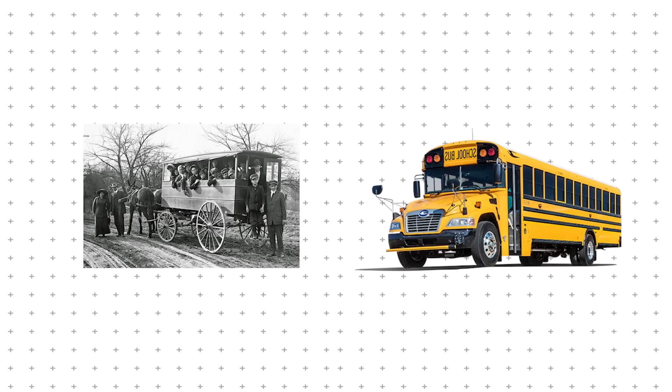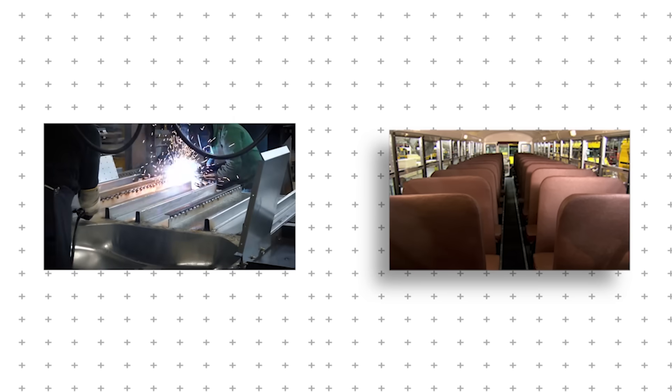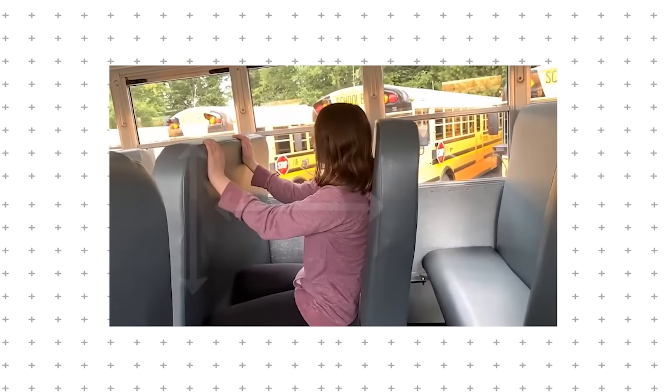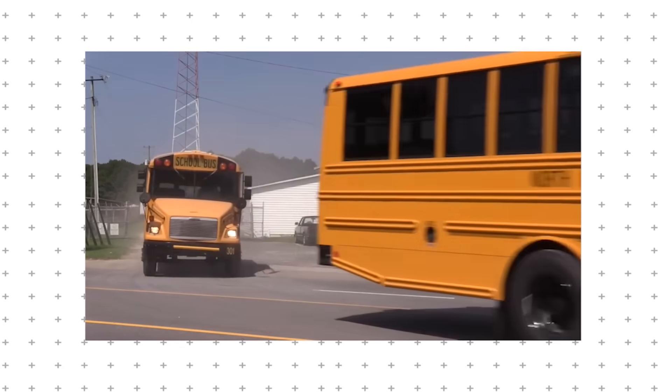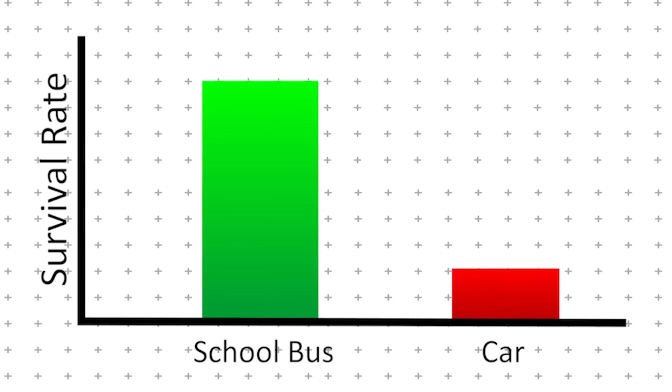Over the past century, school buses have transformed from wooden wagons into some of the safest vehicles ever built. Engineers have reinforced their frames, reshaped their interiors, and redefined how crashes are managed. All while ensuring that safety systems work automatically without requiring passengers to take action. The result is a transportation system that protects millions of students every day, with crash fatality rates far lower than any form of passenger travel.